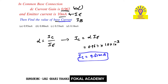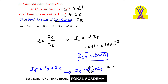According to the problem, we want base current. We know that in a transistor, emitter current is always equal to base current plus collector current. From this, we get base current equal to emitter current minus collector current. Substituting: emitter current is 10 milliampere minus collector current 9.67 milliampere.